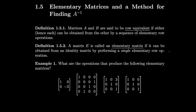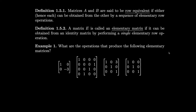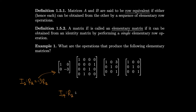Let's look at the operations that produce the following elementary matrices. For the first one, it looks like we took the second row of the identity matrix and multiplied it by negative 3. So we took the 2-by-2 identity, row 2, and set it equal to minus 3 times row 2. For the second one, it looks like rows 2 and 4 just got swapped. So it's the 4-by-4 identity matrix with row 2 swapped with row 4.